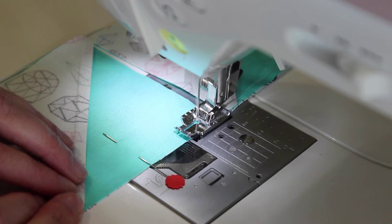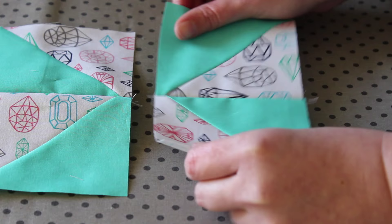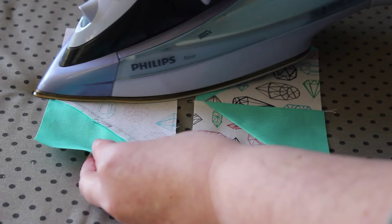Snip the joining threads and open out each row. Press each of the centre seams towards the darker side of fabric and then give the tops a good press as well.